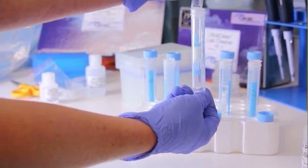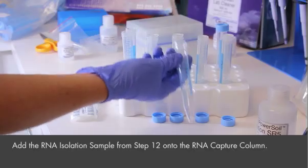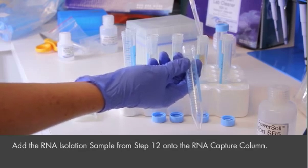The flow shouldn't be higher than one drop per second. Add the RNA isolation sample to the column. Again, increase the flow if needed.